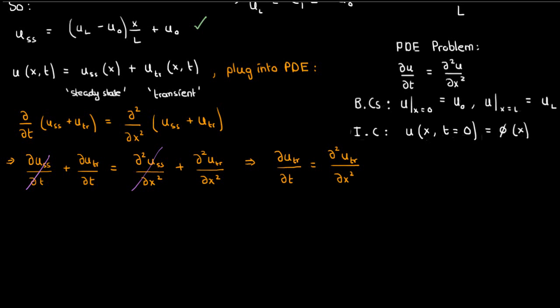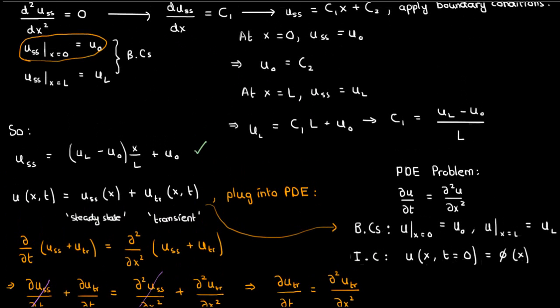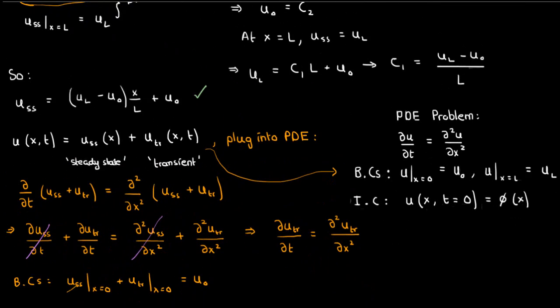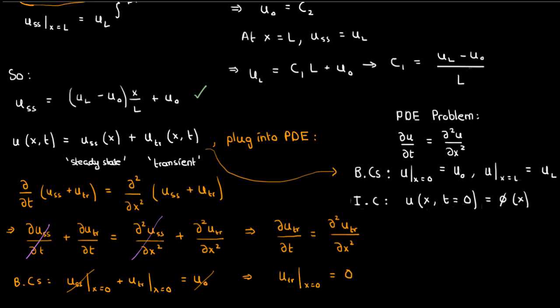So that's convenient, but what about the boundary and initial conditions? If we plug our u into the boundary conditions up here, then we'll have u_ss at x equals 0 plus u_tr at x equals 0 equals u0, but our steady state solution already satisfies this boundary condition. So since u_ss at x equals 0 is u0, the value of the transient solution at x equals 0 is just 0.